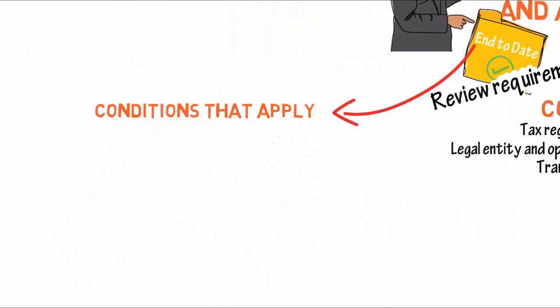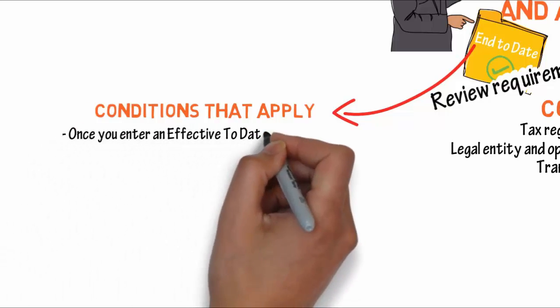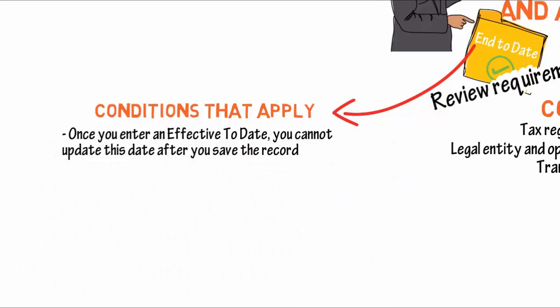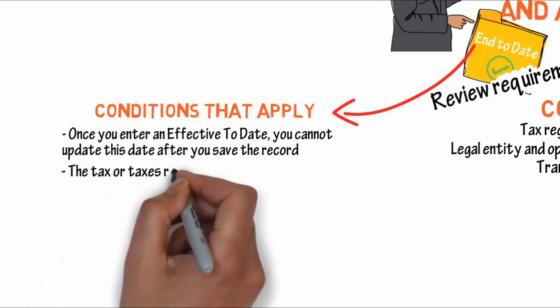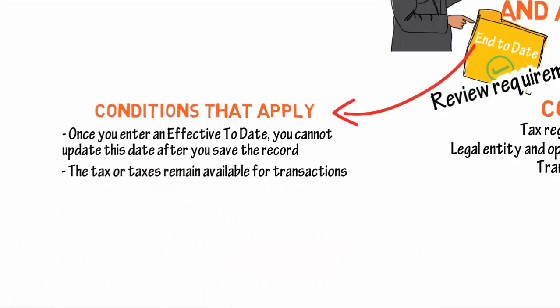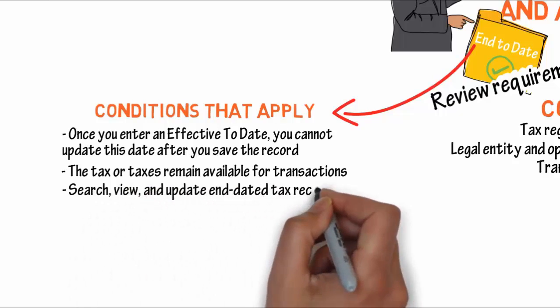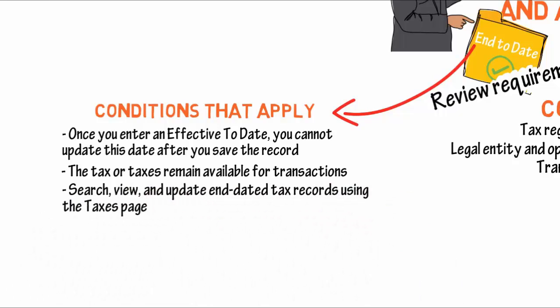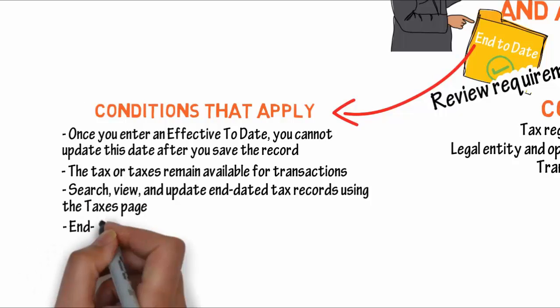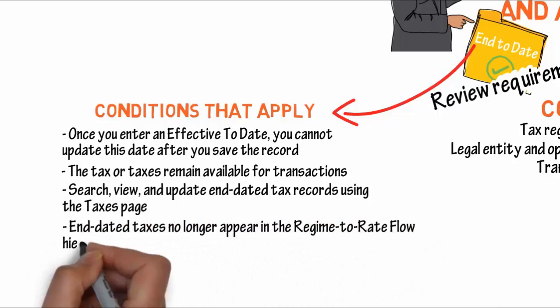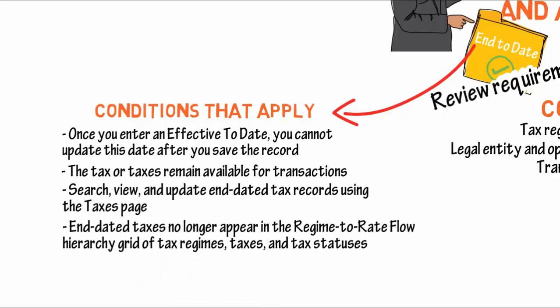You should apply end dates to all of the appropriate records. These conditions apply to end-dated tax records: once you enter an effective end date, you cannot update this date after you save the record. The tax or taxes remain available for transactions whenever the transaction date is within the date range of the applicable tax regime, tax, and configuration owner. You can still search, view, and update end-dated tax records using the tax pages. End-dated taxes no longer appear in the regime-to-rate flow hierarchy grid of tax regimes, taxes, and tax statuses.